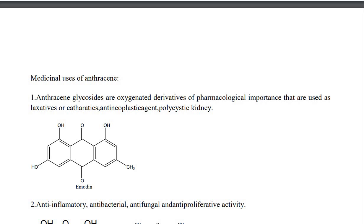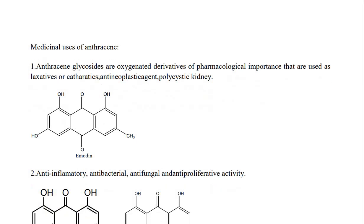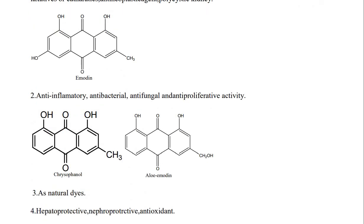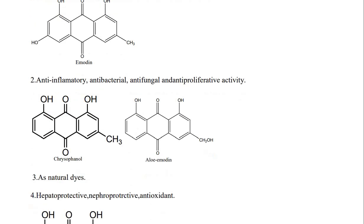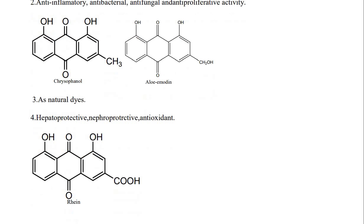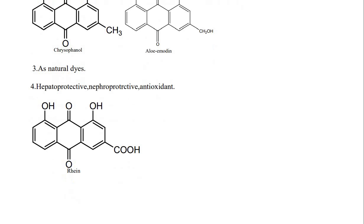Medicinal uses of anthracene: anthracene glycosides are oxygenated derivatives that are pharmacologically important and used as laxatives, cathartics, or antineoplastic agents. Emodin is used as an anti-inflammatory, antibacterial, and antifungal agent. Emodin and chrysophanol are also used as natural dyes, as well as hepatoprotective and nephroprotective antioxidants.